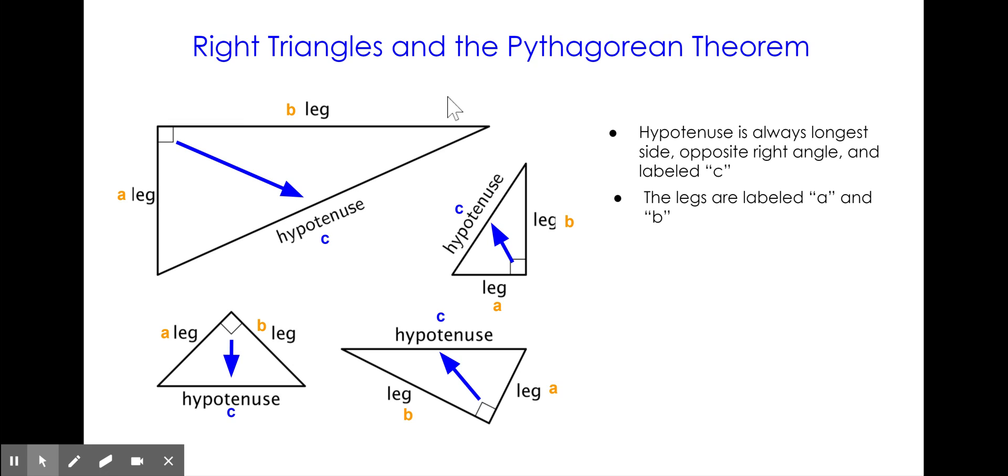As you previously discovered, the sides of right triangles have a special relationship, and that is that the sum of the legs squared equals the hypotenuse squared, and we are now going to prove that mathematically.